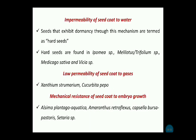In the case of impermeability of the seed coat to water, seeds showing dormancy due to this cause are known as hard seeds. Hard seeds are found in Ipomoea species, Mallotus species, Trifolium species, Medicago sativa, and Vicia species. You need to remember each and every example, as these are asked in exam questions.